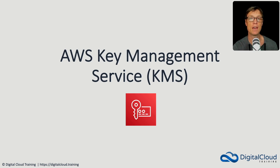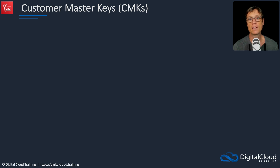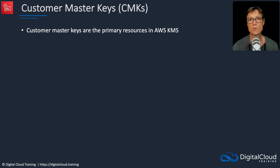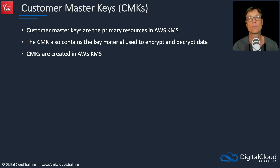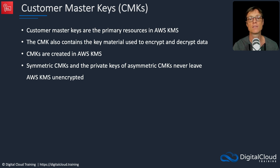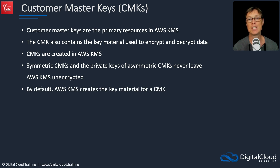AWS Key Management Service (KMS) is used for creation and management of encryption keys. There's something called the Customer Master Key, or CMK. CMKs are the primary resources in KMS and contain the key material used to encrypt and decrypt data. CMKs are created in KMS, and there are symmetric and asymmetric options. Symmetric CMKs and the private keys of asymmetric CMKs will never leave KMS unencrypted. By default, KMS creates the key material for a CMK, but you can optionally supply the key material yourself from an external source.